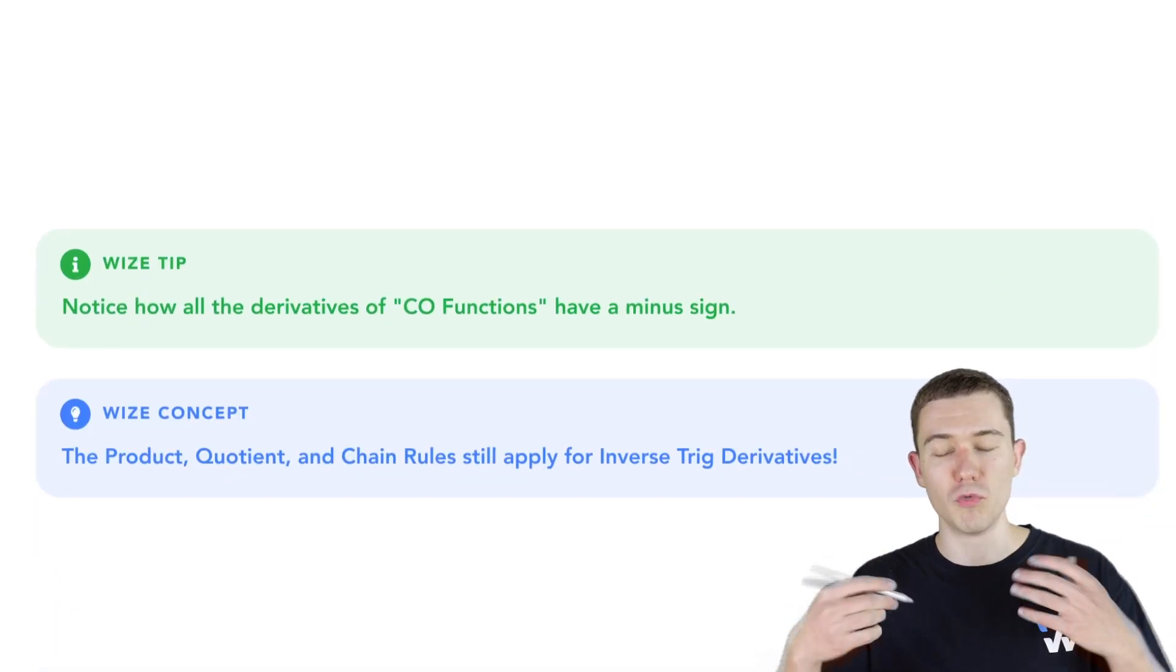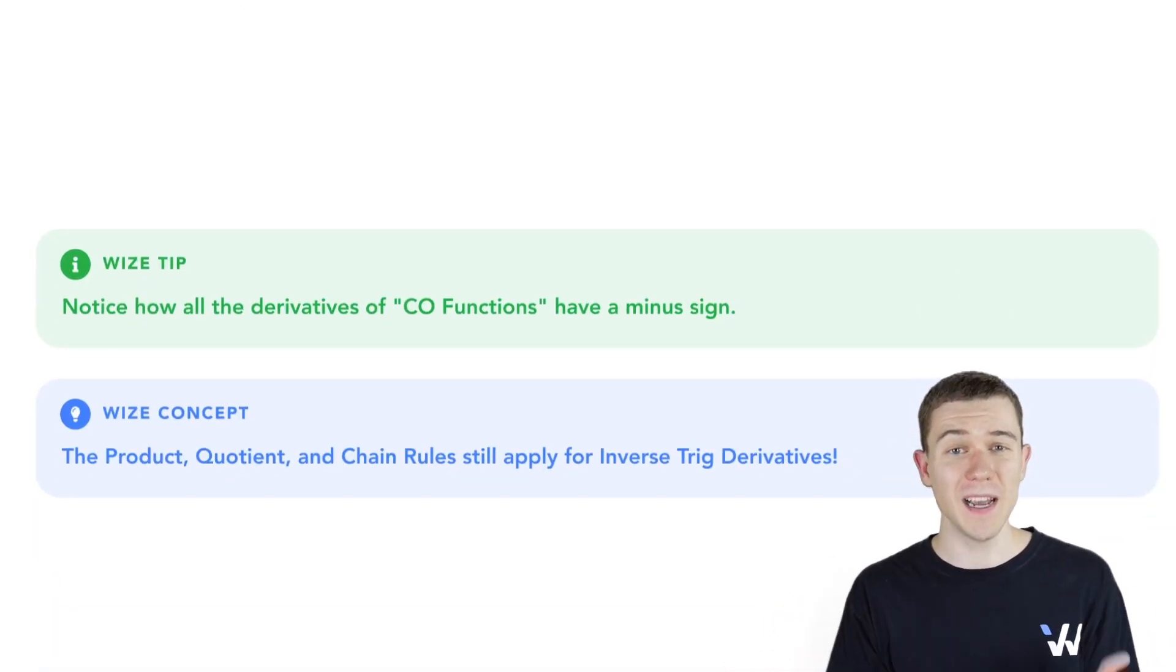So if you didn't notice, all the co-functions, just like regular trig derivatives, have a negative sign. As always, the product quotient and chain rule apply with inverse trig derivatives.